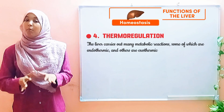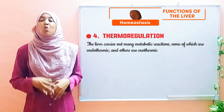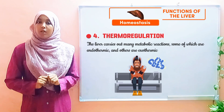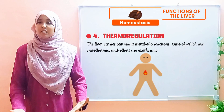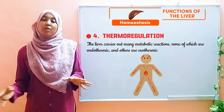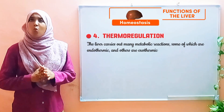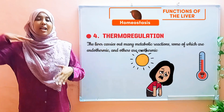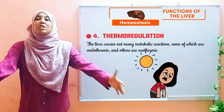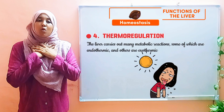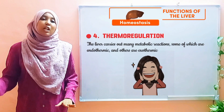The liver is capable of carrying out both exothermic and endothermic reactions. When body temperatures are low, the liver carries out exothermic reactions, which produce heat energy. That heat is then distributed to different parts of the body, causing the body temperature to rise back up to normal. When body temperatures are higher than normal, the liver carries out endothermic reactions, which absorb any extra energy within our body, causing the body temperature to go back down to normal. And that is thermoregulation by the liver.